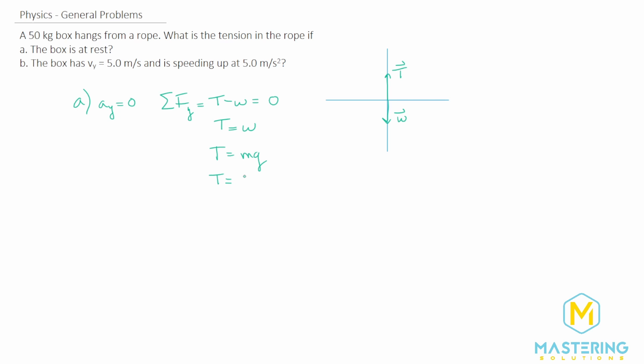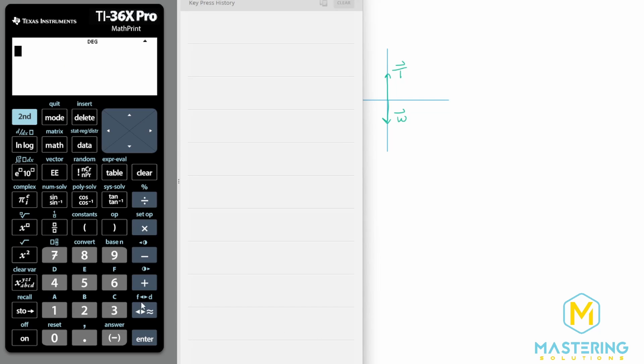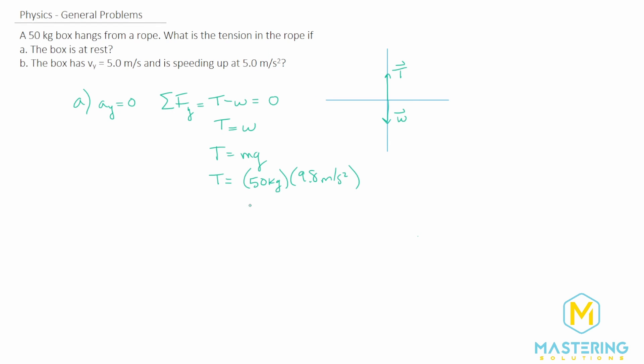So T is equal to 50 kilograms for the box, 50 kg for the mass. And then gravity, of course, is 9.8 meters per second squared. So we have 50 times 9.8. So we have 490 newtons for the tension if the box is at rest.